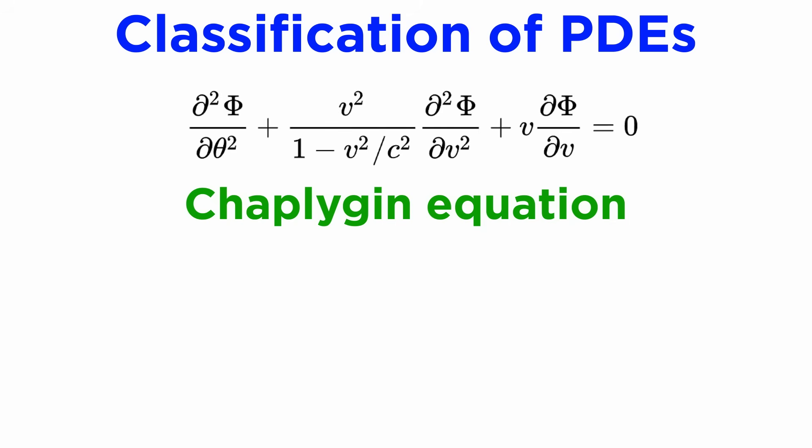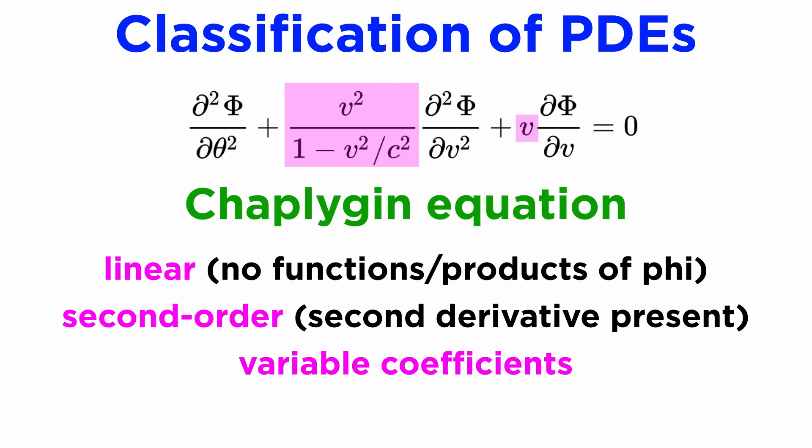Next, here is another PDE known as the Chaplygin equation, where the dependent variable is the capital letter phi, used to model aerodynamic flows near the speed of sound. This equation is linear, second order, and has variable coefficients.